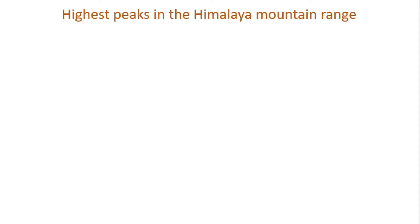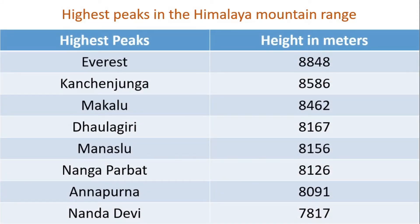It is important to learn about different highest peaks located in the Himalaya mountain range. Look at this table. Highest peaks in Himalayas and their height in meters: Everest — 8,848; Kanchenjunga — 8,586; Makalu — 8,462; Dhaulagiri — 8,167; Manaslu — 8,156; Nanga Parbat — 8,126; Annapurna — 8,091; Nanda Devi — 7,817.